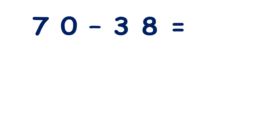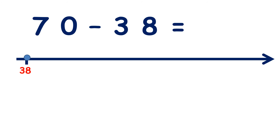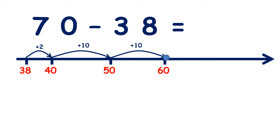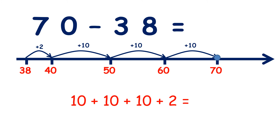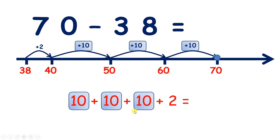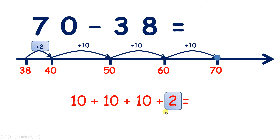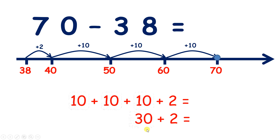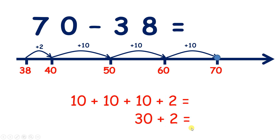Now 70 minus 38. Again, pause the video and see if you can find the difference. So we start on 38 — 2 more makes 40, and now if we count on in tens, we get 50, 60, 70. So we have 10 plus 10 plus 10 plus 2, so we have 30 plus 2, which is 32.